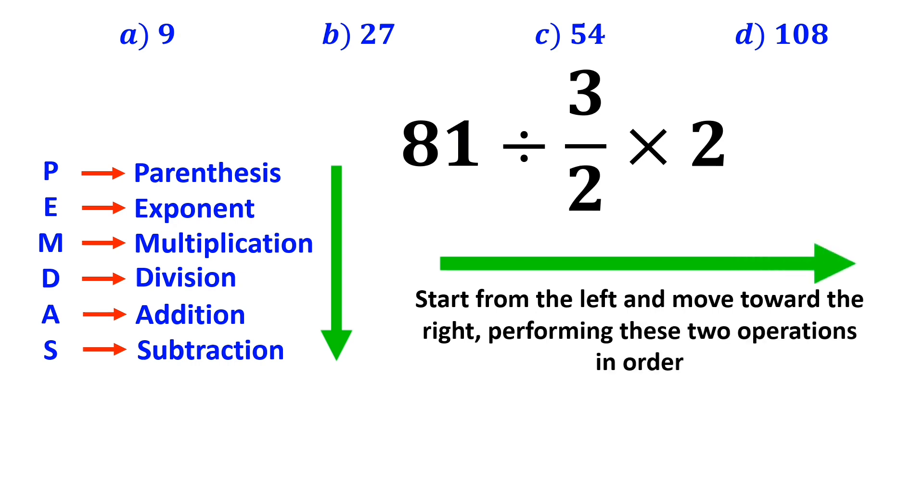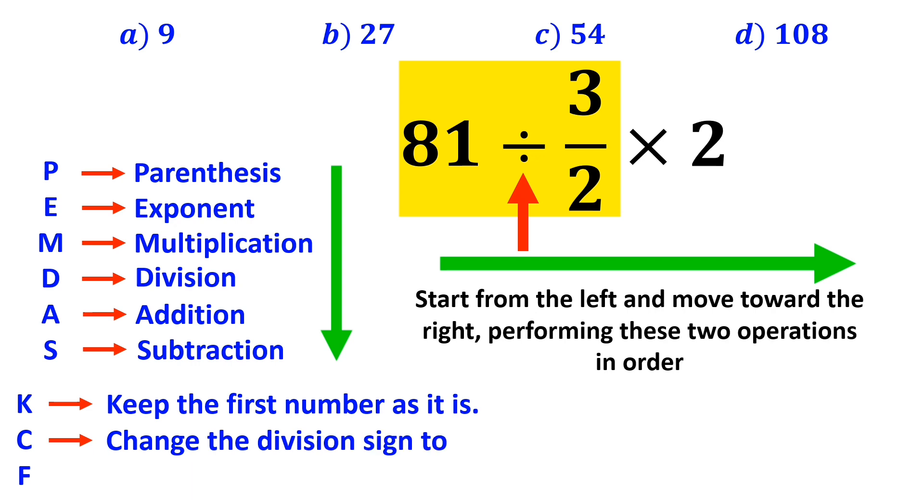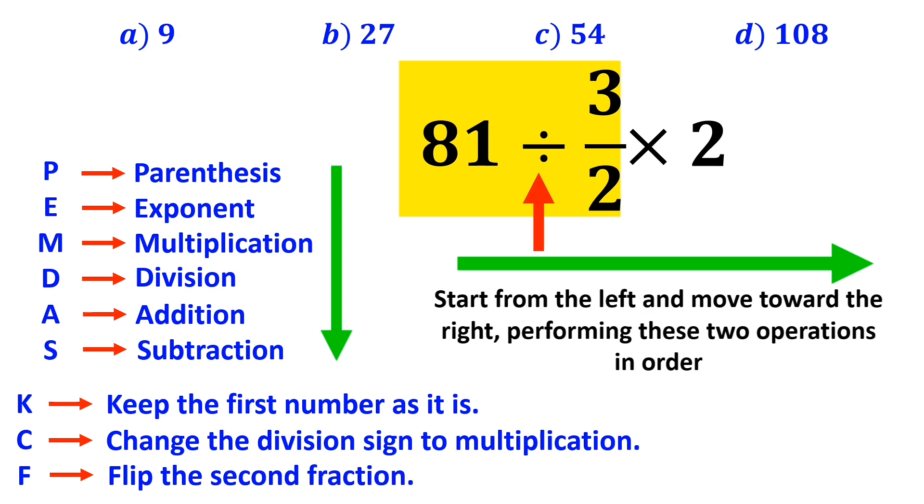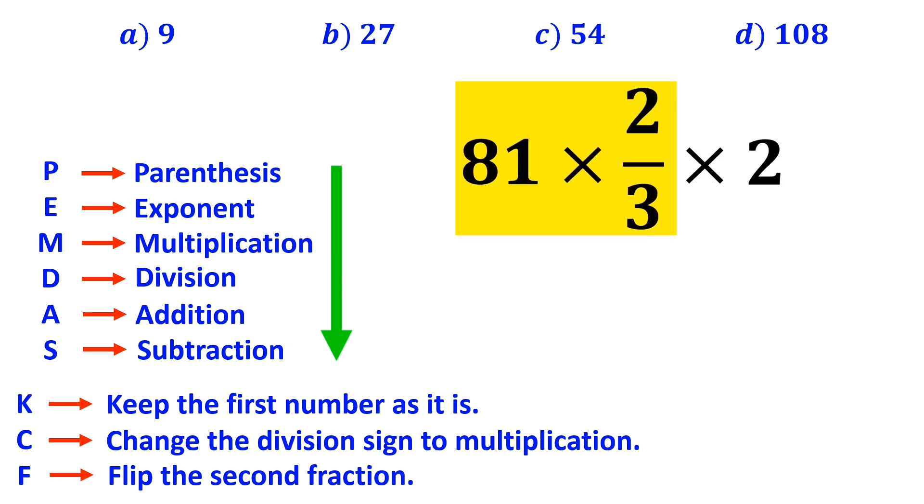So, we start with the expression 81 divided by 3 over 2. Whenever we see a division sign between two terms, the best thing to do is to apply the KCF rule. In this rule, K means keep the first number as it is, C means change the division sign to multiplication, and F means flip the second fraction. So, we remove the highlighted part and rewrite this expression as 81 times 2 over 3 multiplied by 2.